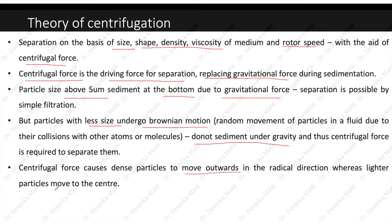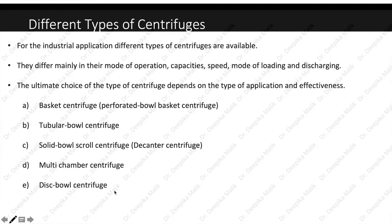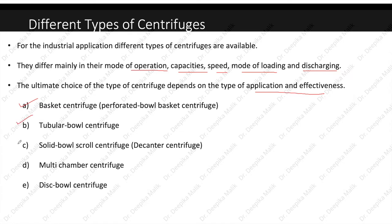For industrial applications, different types of centrifuges are available. They may differ in mode of operation, capacities, speed, and mode of loading and discharging. The choice of centrifuge depends on the type of application and effectiveness. Different types include: basket centrifuge (perforated bowl), tubular bowl centrifuge, solid bowl centrifuge (decanter centrifuge), multi-chamber centrifuge, and disc pulse centrifuge.